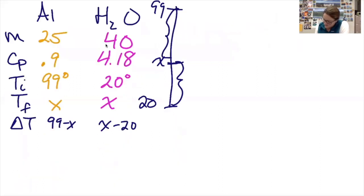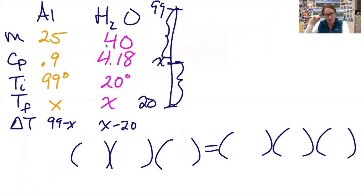So now I'm ready to substitute in. I'm going to have the mass, the specific heat, and the change of temperature of aluminum equals the mass, the specific heat, and the change in temperature of the water.